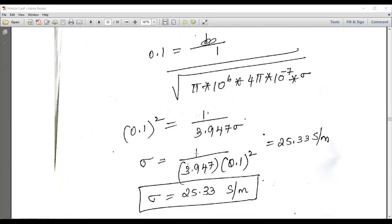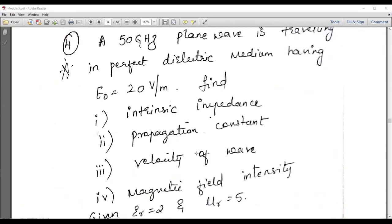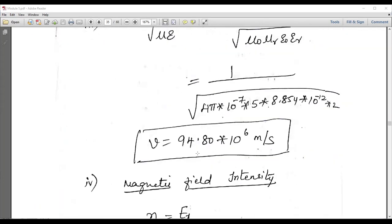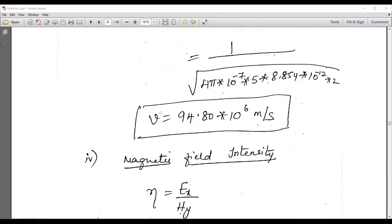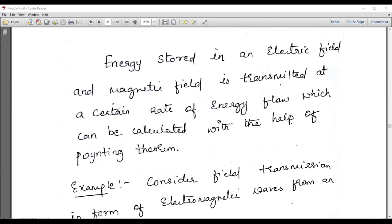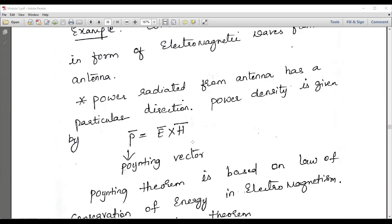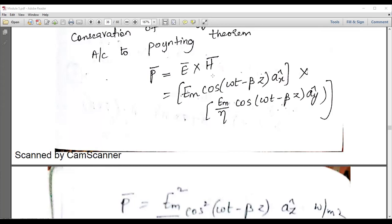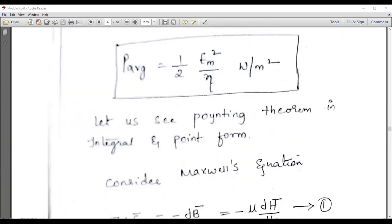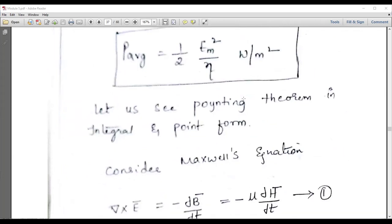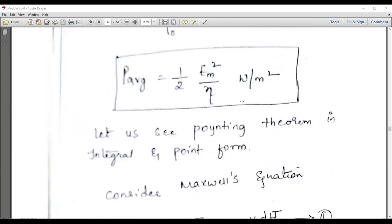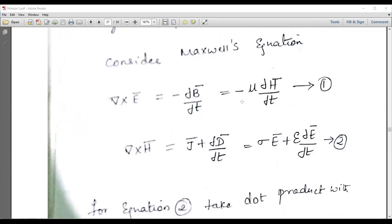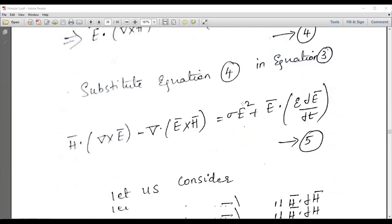Calculation of skin depth is most important. The velocity of the wave form and propagation constant also have relevance. The important equation is v = 1/√(με). Then the Poynting theorem: energy stored in the electric and magnetic field is transmitted at a certain rate of energy flow, which can be calculated with the help of Poynting theorem. The Poynting vector can be written as E×H. The average power = ½E_m²/η watts per meter square. You can use Maxwell's equations to modify and derive the Poynting theorem in integral form.